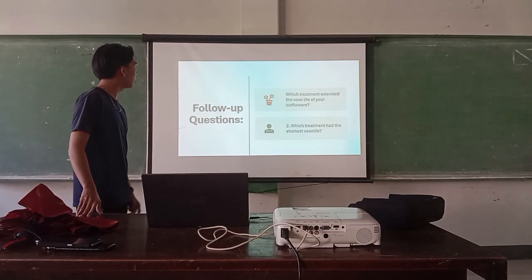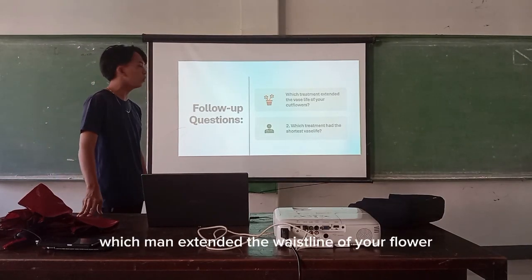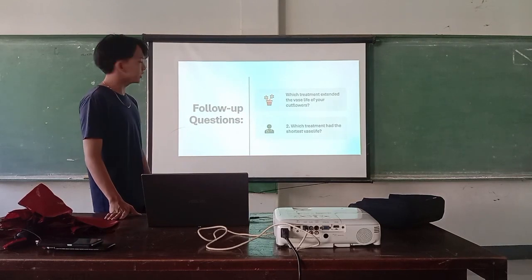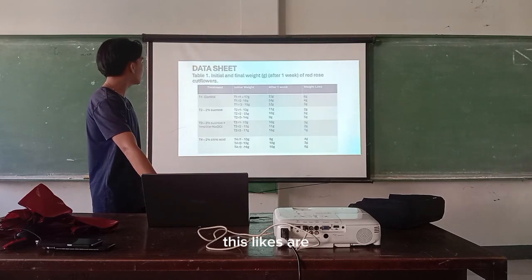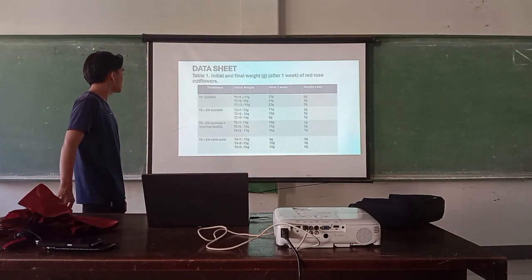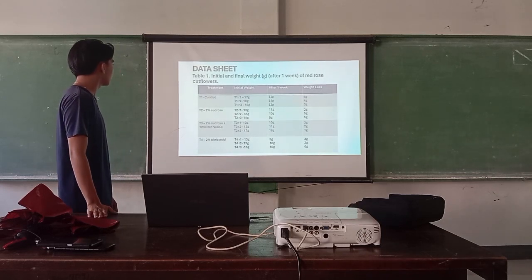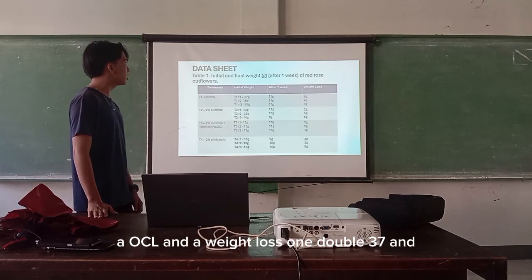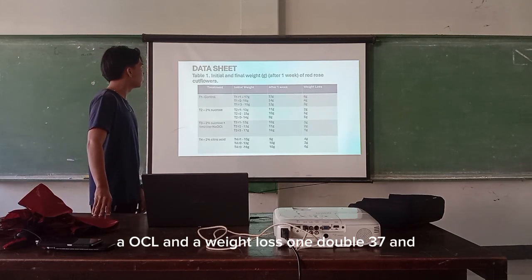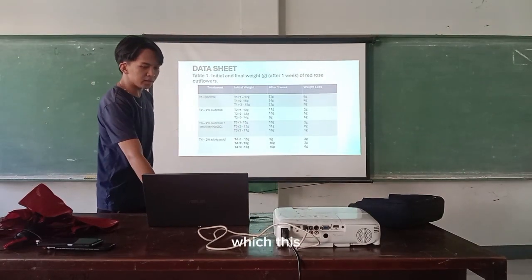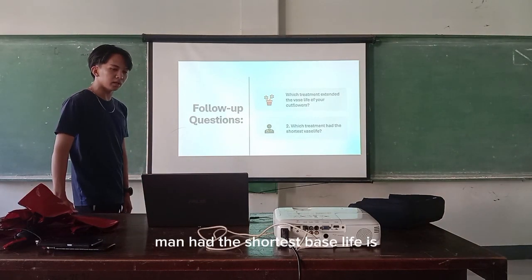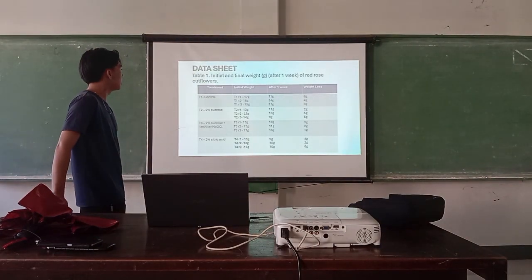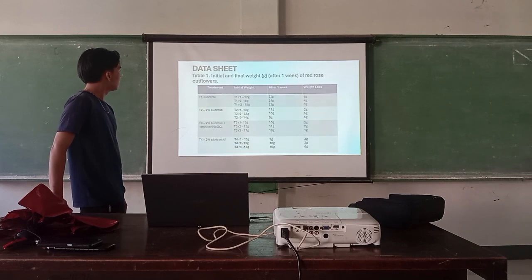Looking at the follow-up question — which treatment extended the vase life of the flowers — we observed that the highest vase life was in Treatment 3, which is 2% sucrose plus 1.0 ml per liter of bleach, because it had the smallest weight loss by Day 7. Regarding which treatment had the shortest vase life, we found that citric acid and the control had similarly poor vase life.